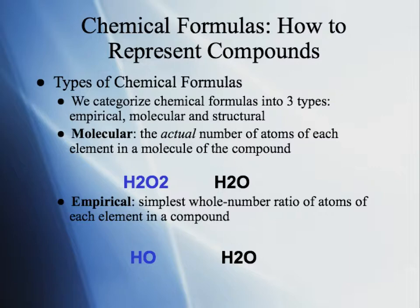There are three types of chemical formulas: empirical, molecular, and structural. A molecular formula gives the actual number of atoms of each element in a molecule. For hydrogen peroxide it's H2O2; for water it's H2O. The empirical formula is the simplest whole number ratio of atoms in a compound — like simplifying fractions. For example, 4 over 4 simplifies to 1 over 1.